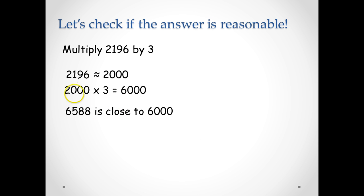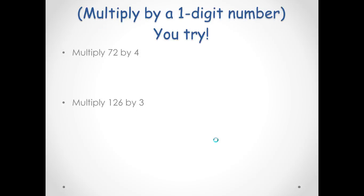We know that 2,196, when we round to the nearest thousand, is 2,000. So 2,000 times 3 is 6,000. 6,588 is close to 6,000, and we say that the answer is reasonable. Let's pause and you try these sums.